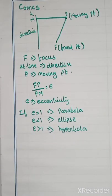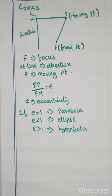So we are going to study about three conic sections: first, parabola; second, ellipse; third, hyperbola.